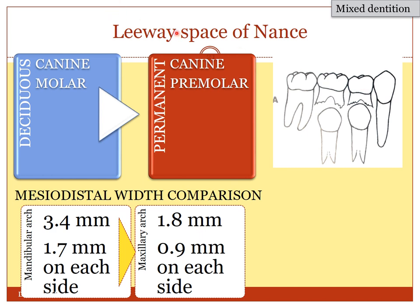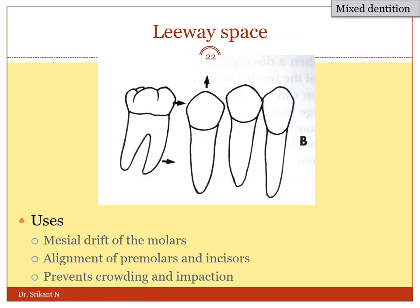Generally, the deciduous canine and the molars are bigger than the permanent premolars. The difference between the deciduous and the permanent is called leeway space of Nance. Roughly, they are 3.4 millimeters in the mandibular arch and 1.8 millimeters in the maxillary arch, accounting for 1.7 millimeters on each side of the mandibular arch and 0.9 millimeters on each quadrant of the maxillary arch. Leeway space is essential, which allows the mesial drifting of the permanent first molar and allows for proper alignment of the premolars and the incisors. When the leeway space is less, there may be crowding and the permanent premolars may not have enough space to erupt, leading to malocclusion.